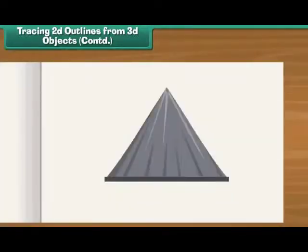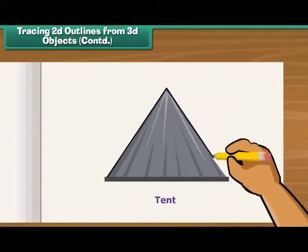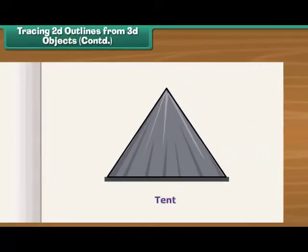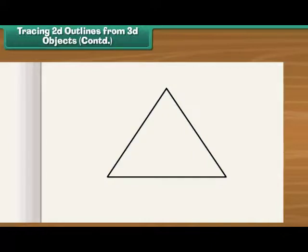Place a miniature tent on a sheet of paper. Draw a line along its outer edge. Remove the tent. You can see a triangle on the sheet.